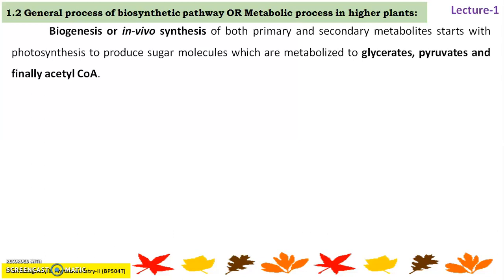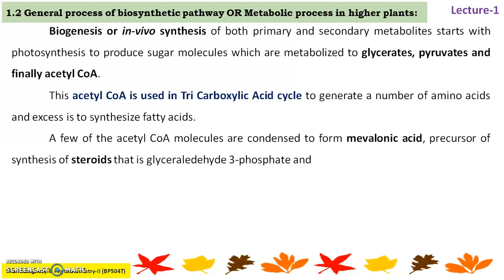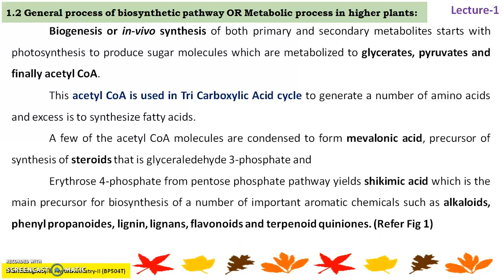The general process of the biosynthetic pathway in plants starts with photosynthesis to produce sugar molecules, which are metabolized further to glycerates, pyruvates, and finally acetyl-CoA, which yields ATP molecules. This acetyl-CoA is used in the tricarboxylic acid cycle to generate a number of amino acids and also to synthesize fatty acids. A few acetyl-CoA molecules are condensed to form mevalonic acid, a precursor for steroid synthesis. Glyceraldehyde-3-phosphate and erythrose-4-phosphate from the pentose phosphate pathway yield shikimic acid.